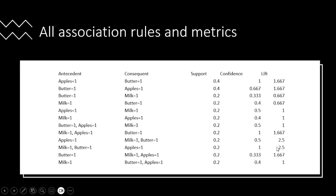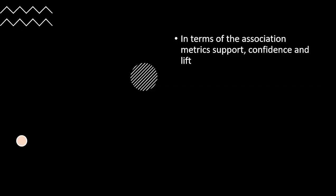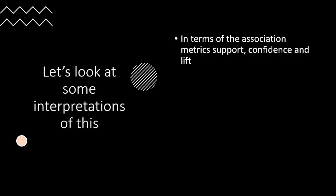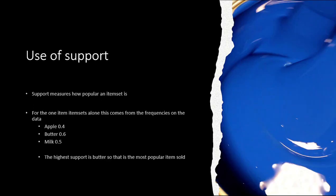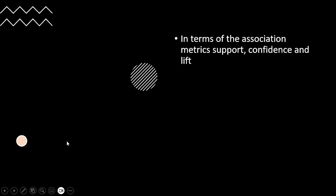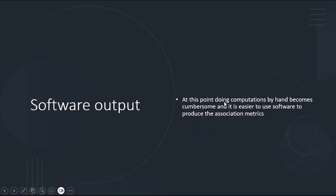The higher the lift, the stronger the association. Support really just measures popularity. All three — support, confidence, and lift — are measures of association but look at different aspects. Items with higher support are simply more popular: butter at 0.6, milk at 0.5, apples at 0.4, coming from the frequency of individual items.